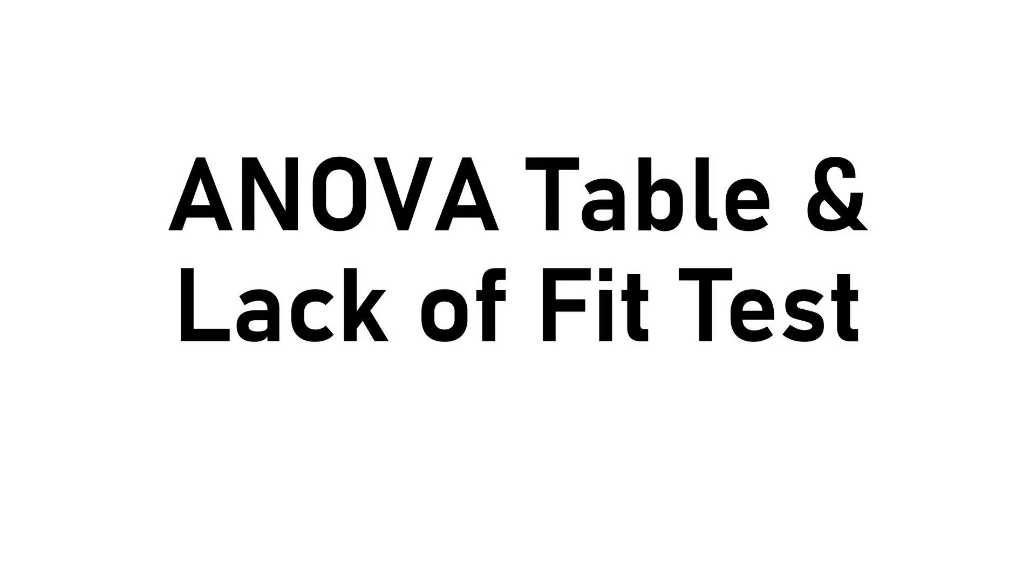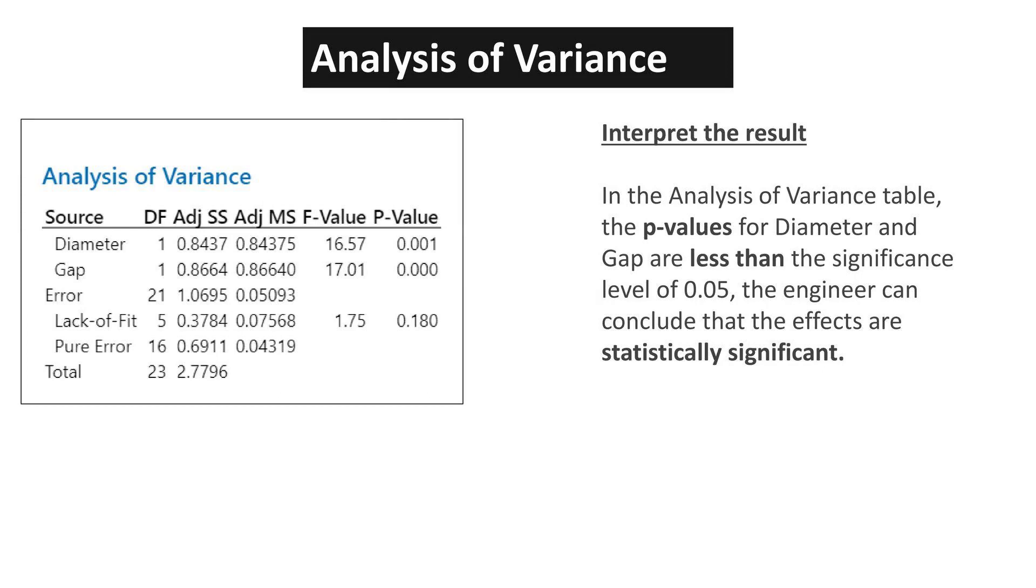ANOVA tables paired with lack-of-fit tests provide a comprehensive view of model adequacy, ensuring that the chosen model fits the data well. Significant p-values in an ANOVA table signal meaningful effects, guiding decisions with statistical confidence and precision. In the analysis of variance table, the p-values for diameter and gap are less than the significance level of 0.05. The engineer can conclude that the effects are statistically significant.